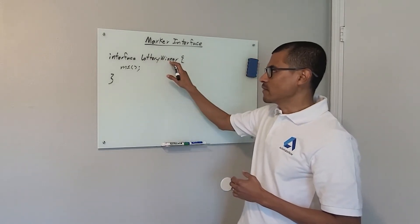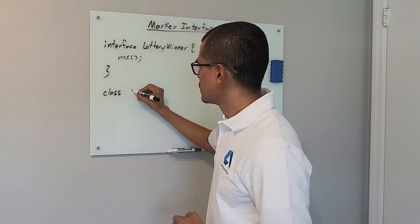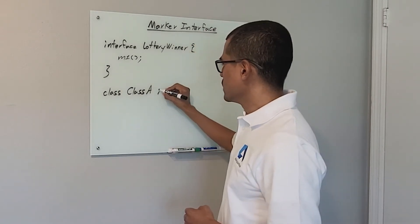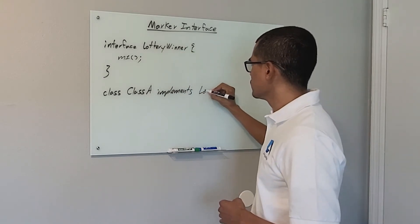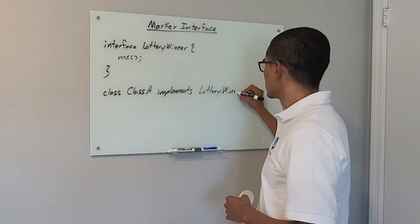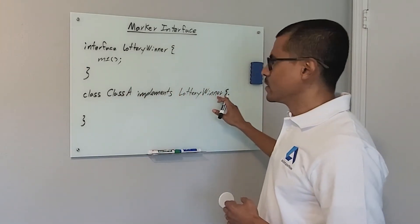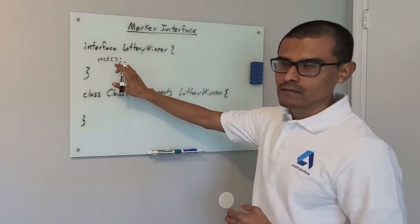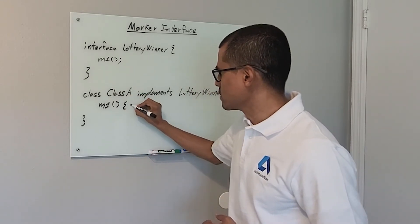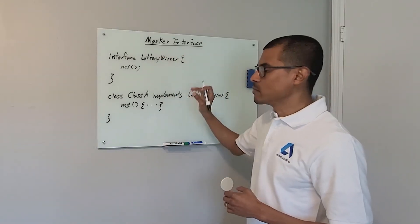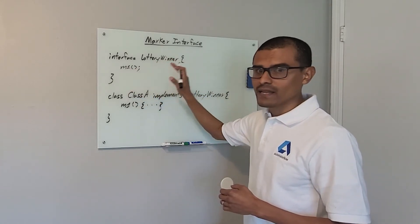A method in an interface will not contain a body. Any classes implementing this interface will be required to implement this method as well. Let's go ahead and create one of those classes — we're going to say class A, which implements this interface. Since class A is implementing the Lottery Winner interface, class A will be required to implement this method as well. So here we're going to have method one, and this method will contain a body. We can use interfaces in Java to define prerequisites that any classes should implement.